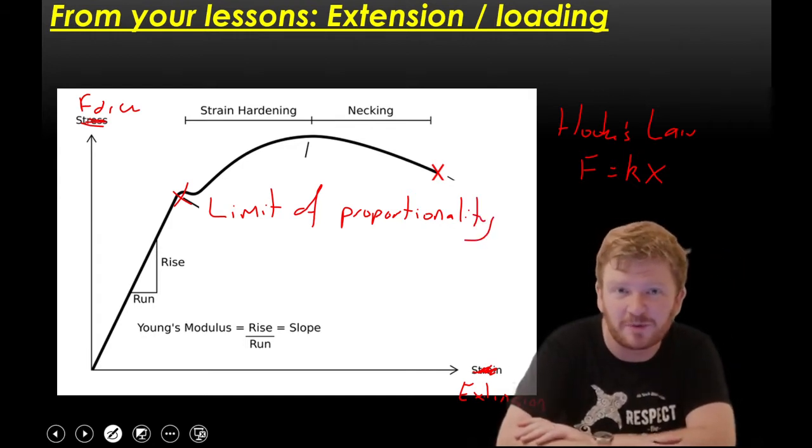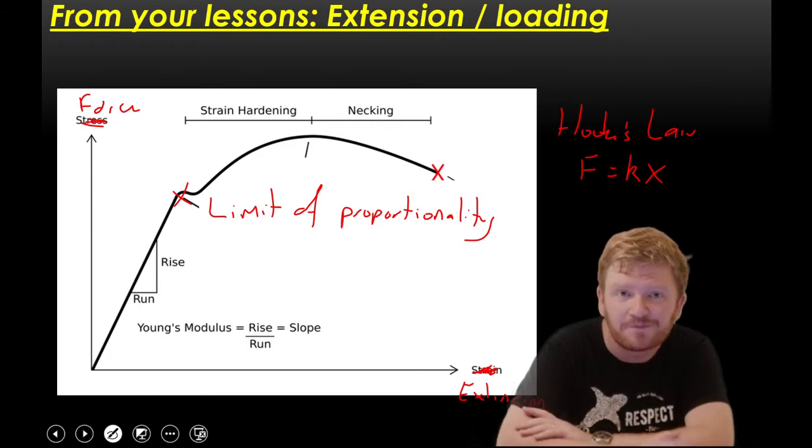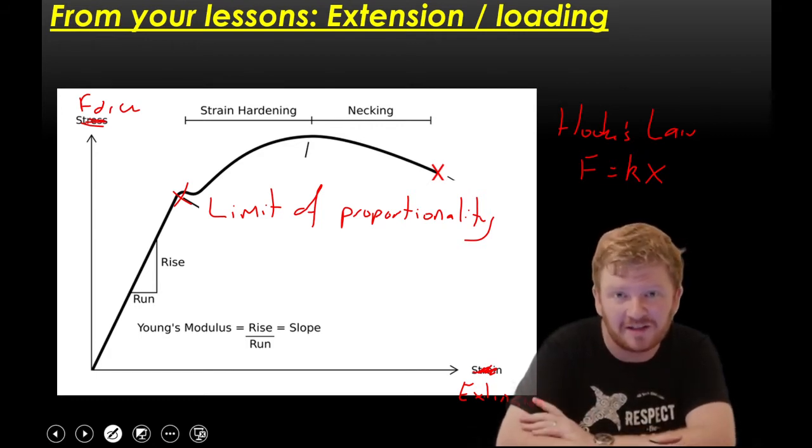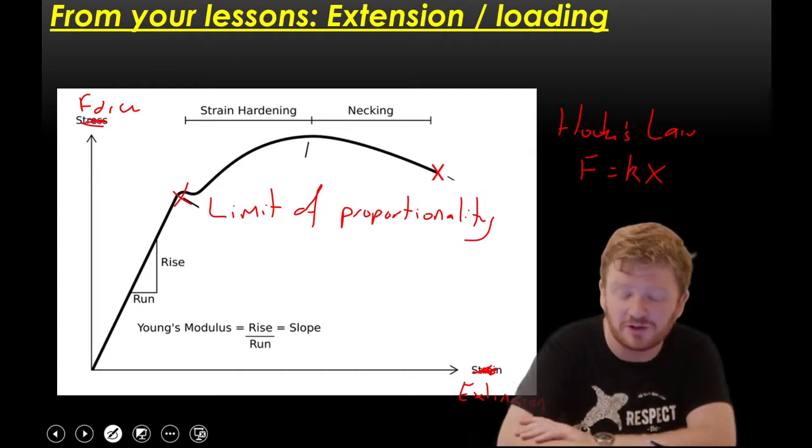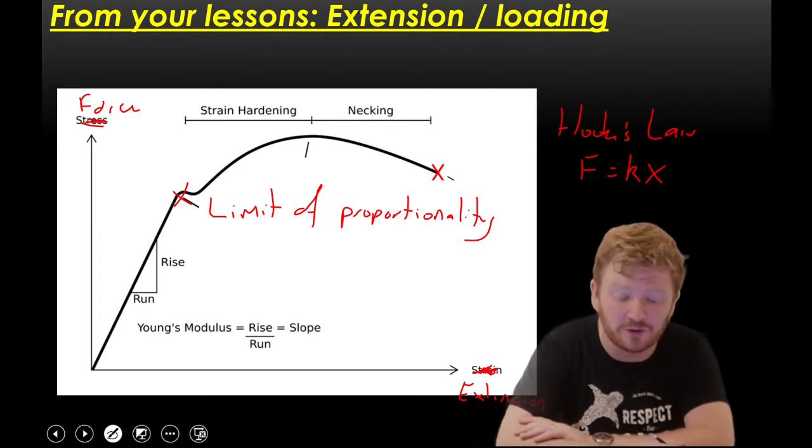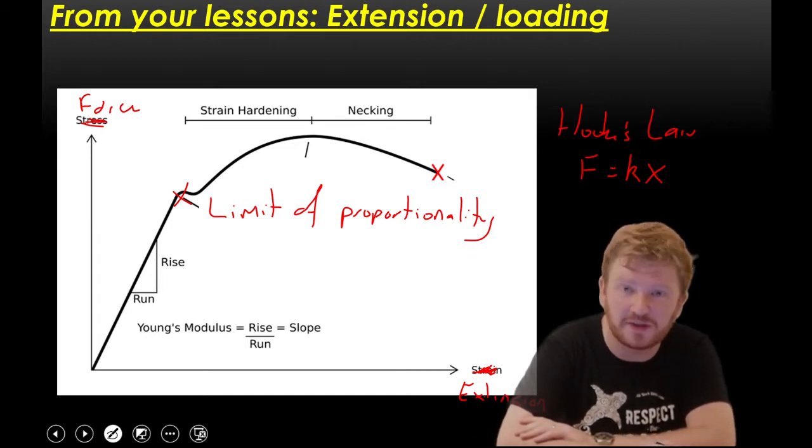And pretty much all materials do obey Hooke's law to a small extent. Rubber's a bit weird, rubber tends to give us a curve, but nearly everything else will obey Hooke's law up to a point. Some things like glass, it only obeys it for fractions of a millimetre, but it's there if you can measure it accurately enough. However, also, nearly all materials have a limit of proportionality where they stop obeying Hooke's law and they start to curve.